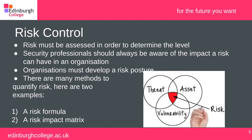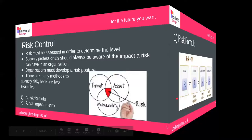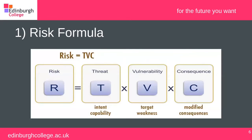There are many methods to quantify risk. Here are two examples: a risk formula and a risk impact matrix. I have a Venn diagram showing threat, asset, and vulnerability, with risk in the middle. The risk formula can be written as: Risk = Threat × Vulnerability × Consequence. I've also seen the C representing Cost. So Risk = Threat × Vulnerability × Consequence is a classic risk formula.